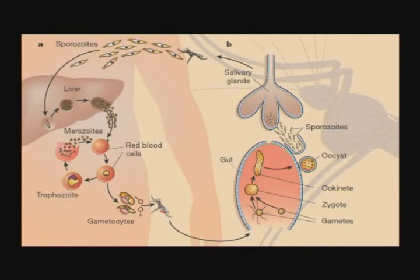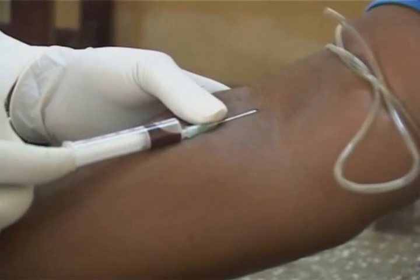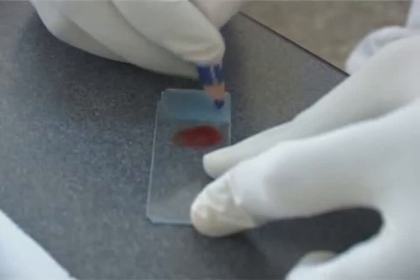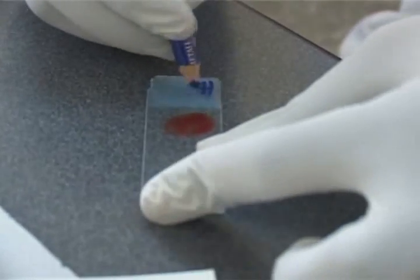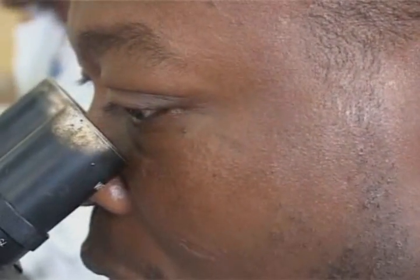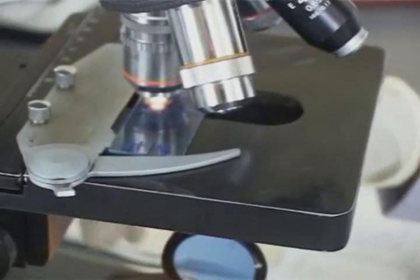We have another type called Plasmodium malariae, which is also present in Ghana. If you have that type and do not treat it, it can remain in the body for up to 50 years.